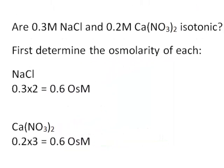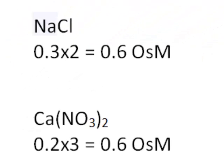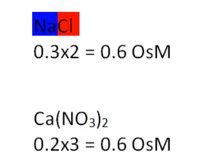Here is another example. Are 0.3 molar sodium chloride and 0.2 molar calcium nitrate isotonic? Again, determine the osmolarity of each solution first. For sodium chloride, it's 0.3 molar times the two ions in the formula, so the osmolarity is 0.6.